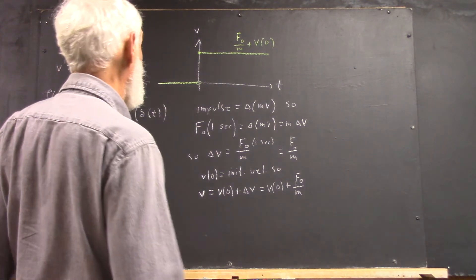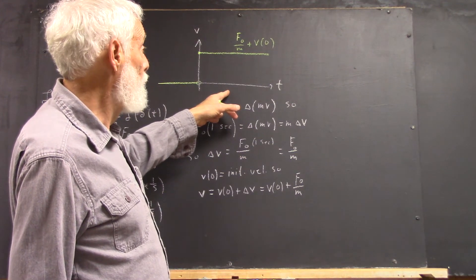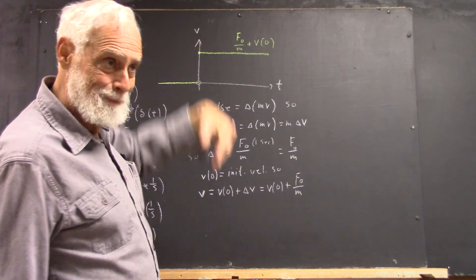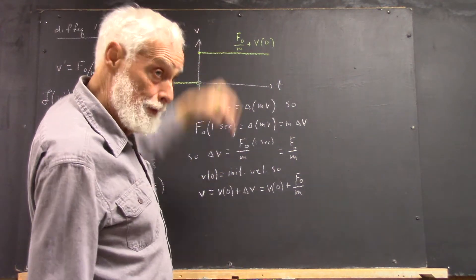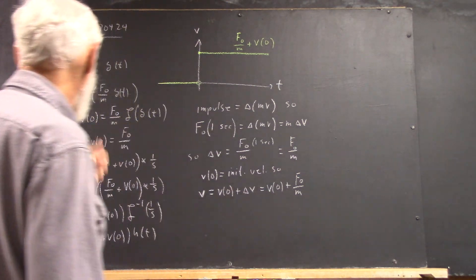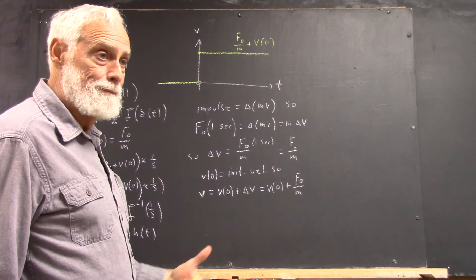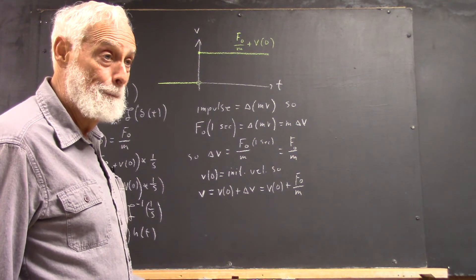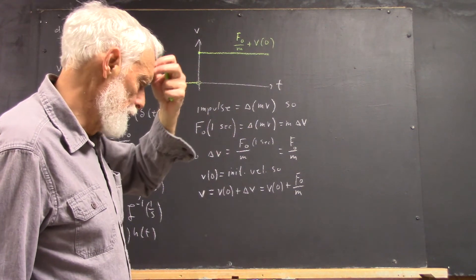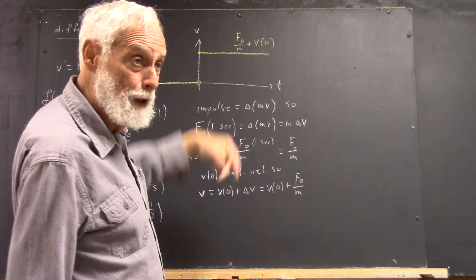And what happens if we hit it again? Well, if it's gone away from us and we hit it, the velocity is going to spike up to another. So you're going to have the sum of these two Heaviside functions. And if it's coming toward you, you're going to have a negative effect on the velocity. It could come down, it could even go negative.